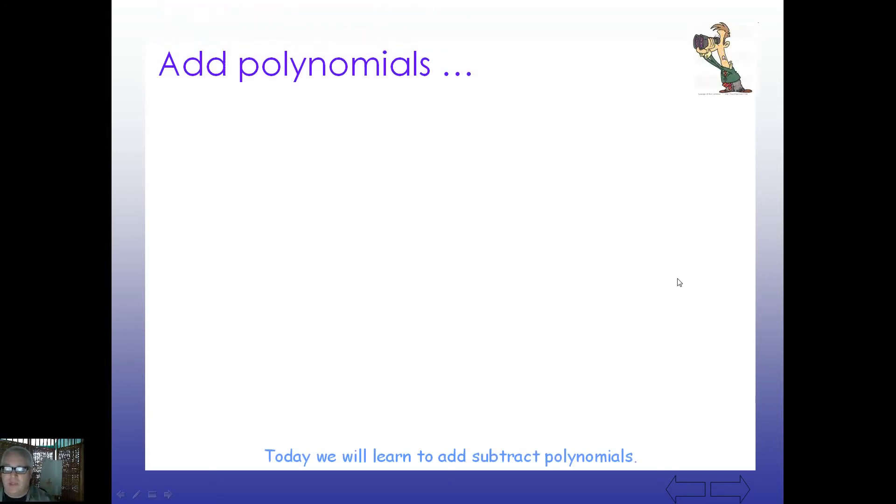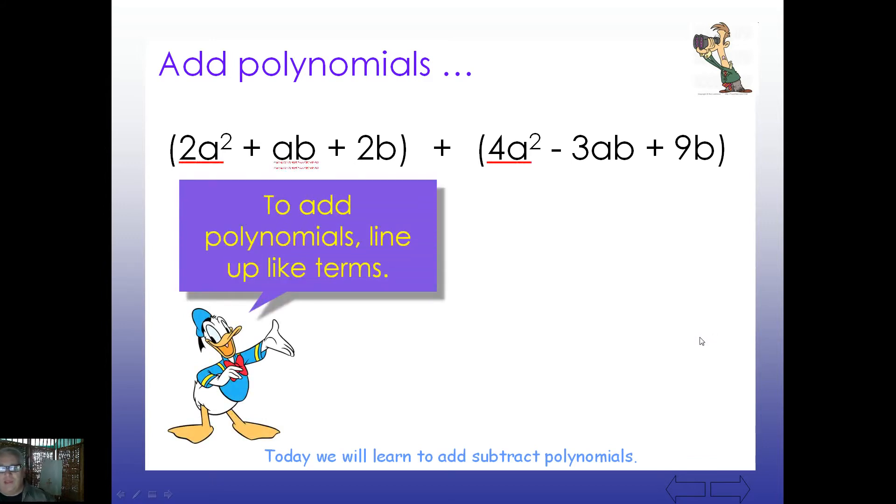You're going to see some examples here. If we add polynomials, what we're looking for are things that match perfectly. For example, 2a² plus ab plus 2b, notice those are all in parentheses, plus 4a² minus 3ab plus 9b. So what I'm going to do here is take a look. To add polynomials, we're going to line up like terms.